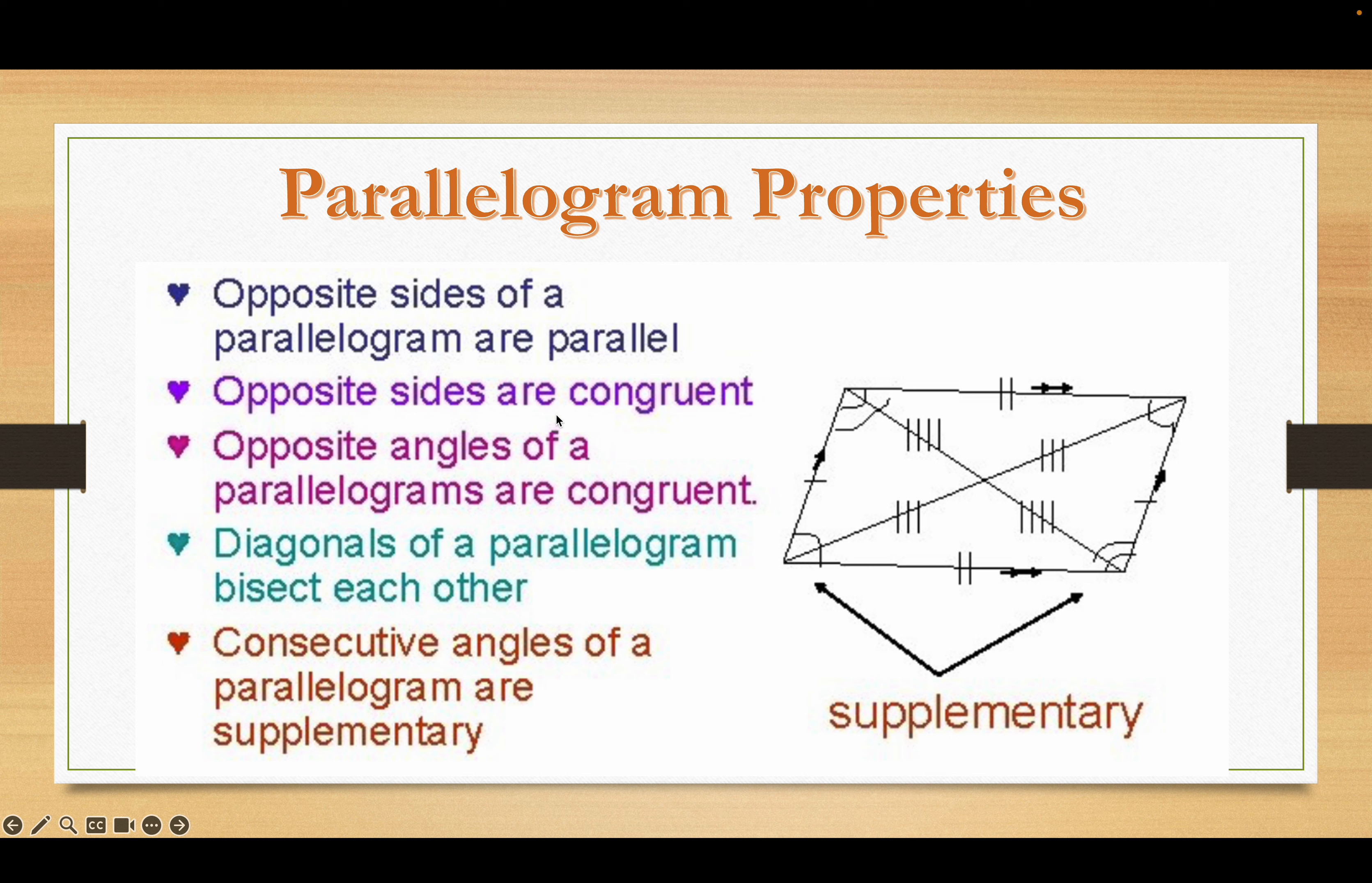The diagonals of a parallelogram bisect each other. This is the first time we've come up with this word bisect. It means to cut it to two equal parts. Bi meaning two, sect meaning cut, bisect. And then, so there's another example where you don't have to study the word bisect like crazy. Understand what bisect means. Cut into two and then remember equal parts.